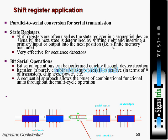Now, bit serial operations can be performed quickly through device iterations. However, iteration is expensive in terms of transistor, chip area, and power. A sequential approach allows the reuse of combinational function units throughout multi-cycle operations. So these are the applications of shift registers.